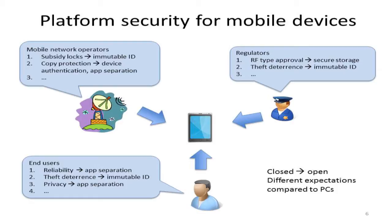Finally, there are end users. End users grew up using closed embedded devices that were very robust and secure. When devices opened up, users expected the same level of robustness and security. Unlike with PCs — where users were trained from day one to expect crashes and blue screens — it's harder to reduce reliability expectations for a user base accustomed to very robust mobile devices. That meant applications should be separated so one faulty application couldn't bring down the whole device.